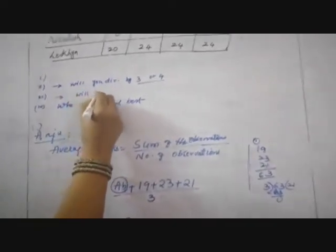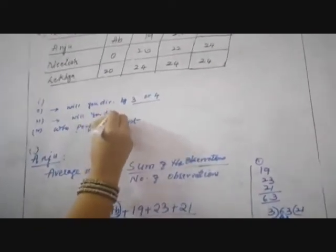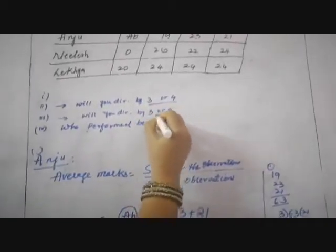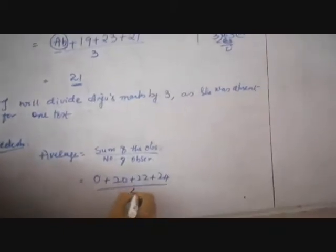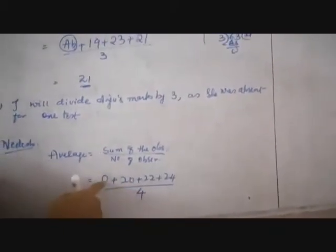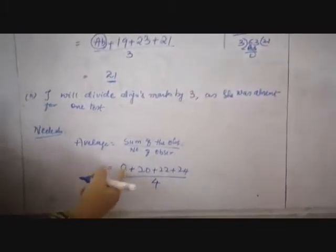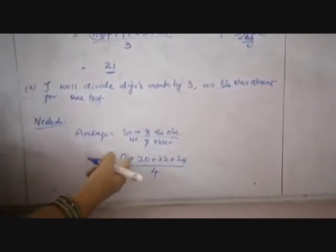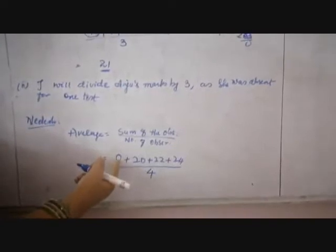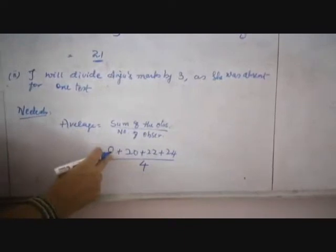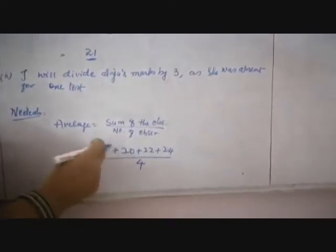He is asking in the third bit: will you divide by 3 or 4? I will divide Nilesh's marks by 4, because he was present but he got 0 marks. It's different — he got 0 marks, so he wasn't doing hard work. He was not absent; he was present but got 0 marks. So the average marks are divided by 4, not by 3. Whenever the student is absent, divide by 3. But when he is present and getting 0 marks, the marks are still divided by 4.